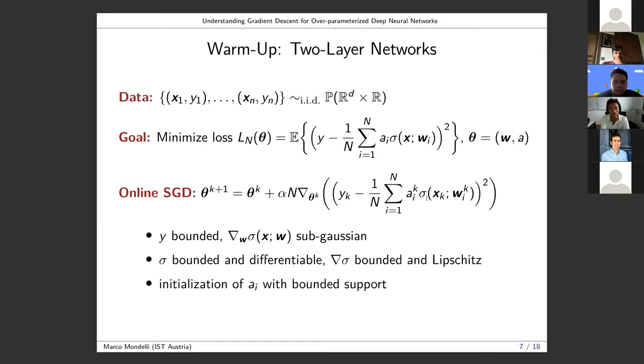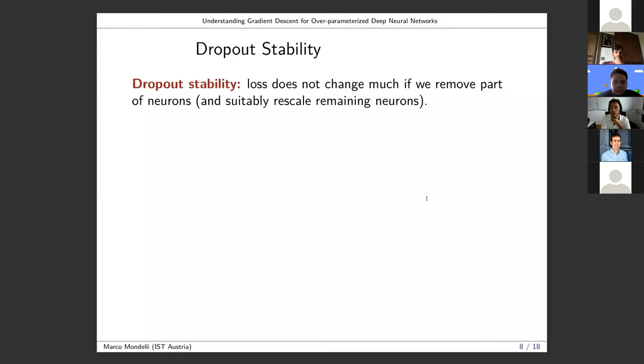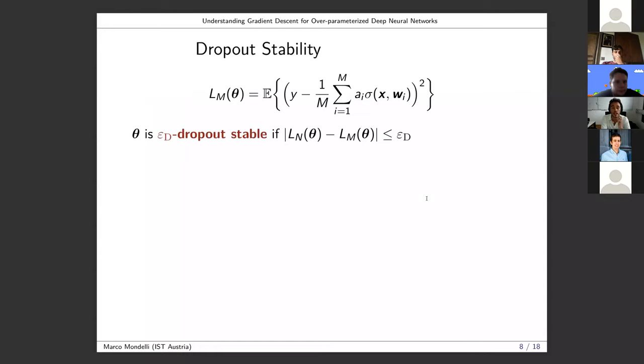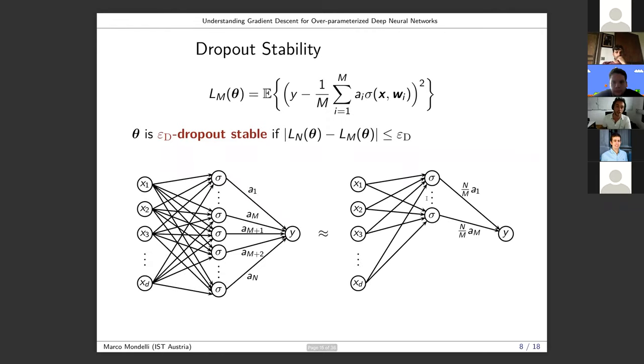Let me define formally what dropout stability is. We say that the network is dropout stable if the loss does not change so much when we remove part of the neurons and suitably rescale the rest. Slightly more formally, L_m is the loss of a neural network with m neurons, and L_n is the loss of a neural network with n neurons when I remove them at random. I'll say that the parameters theta are epsilon_d dropout stable if the loss doesn't decrease more than epsilon_d. To put this in a picture: this is my original network with n neurons, this is my dropout network with m neurons - these two must be pretty close, so the loss between these two has to be small, smaller than epsilon_d.